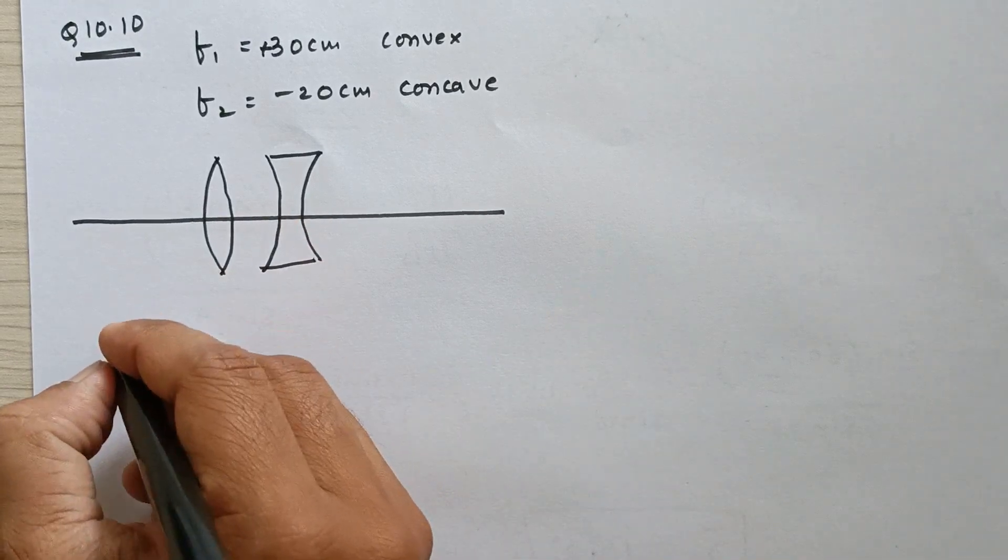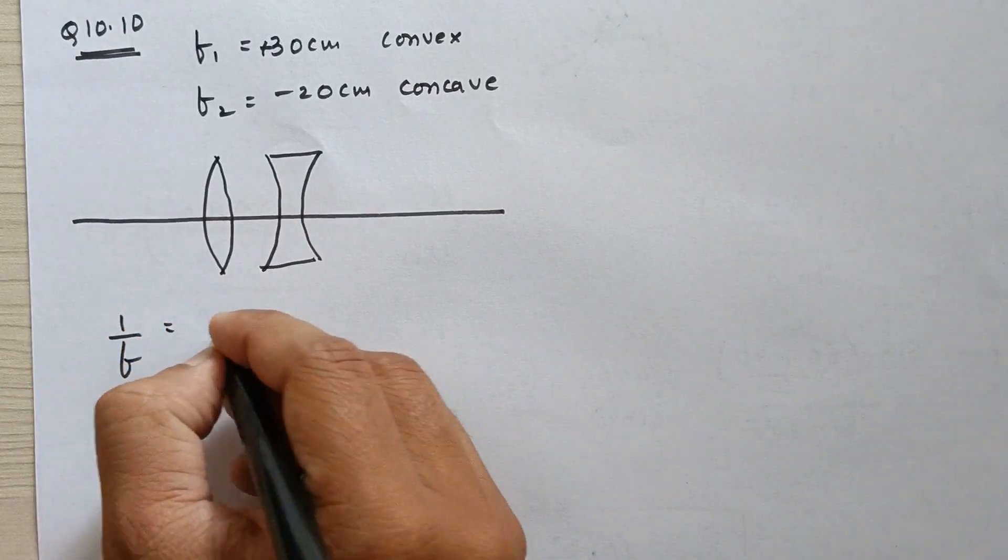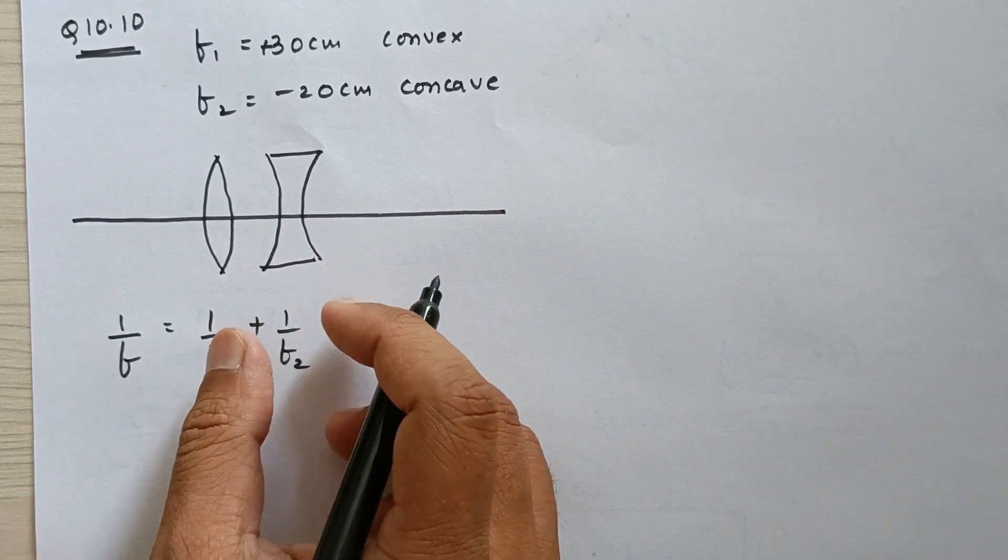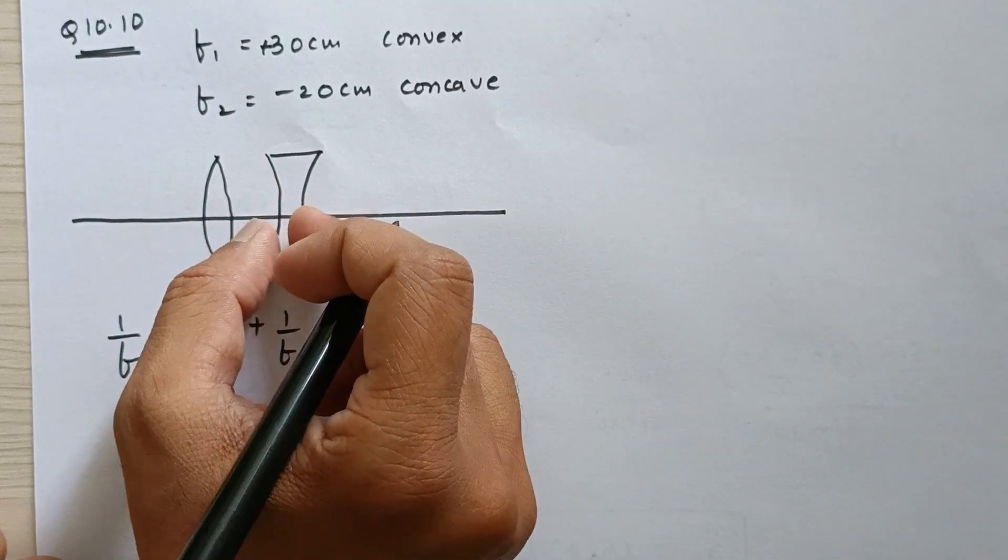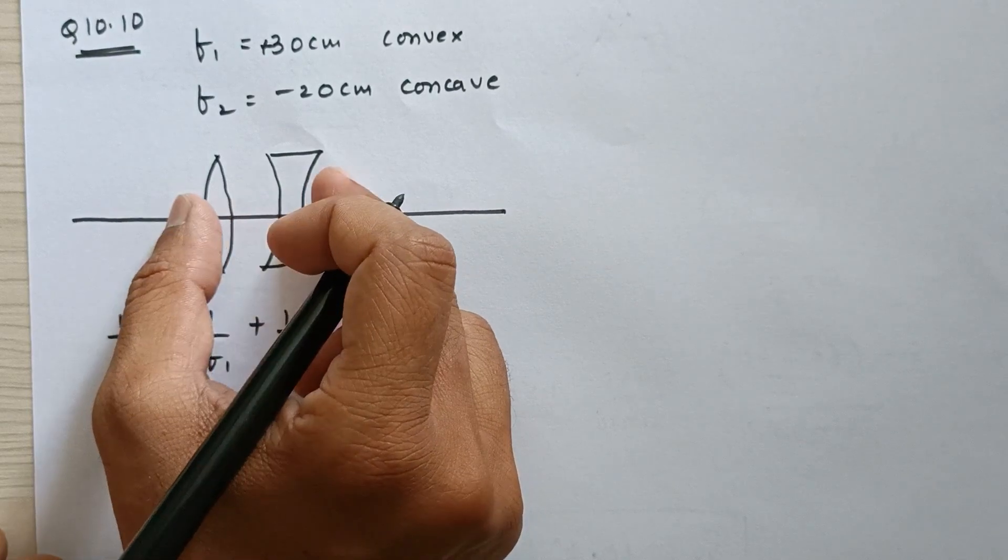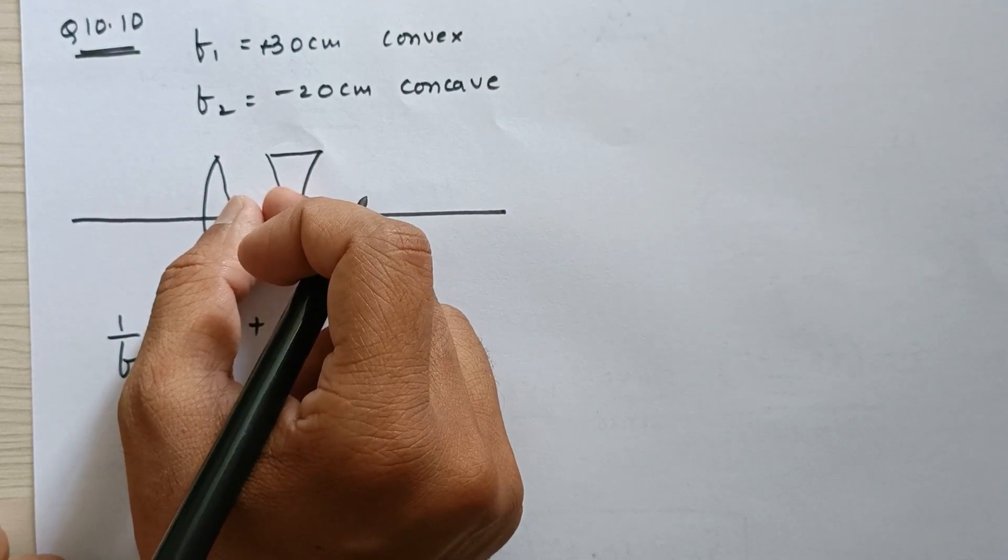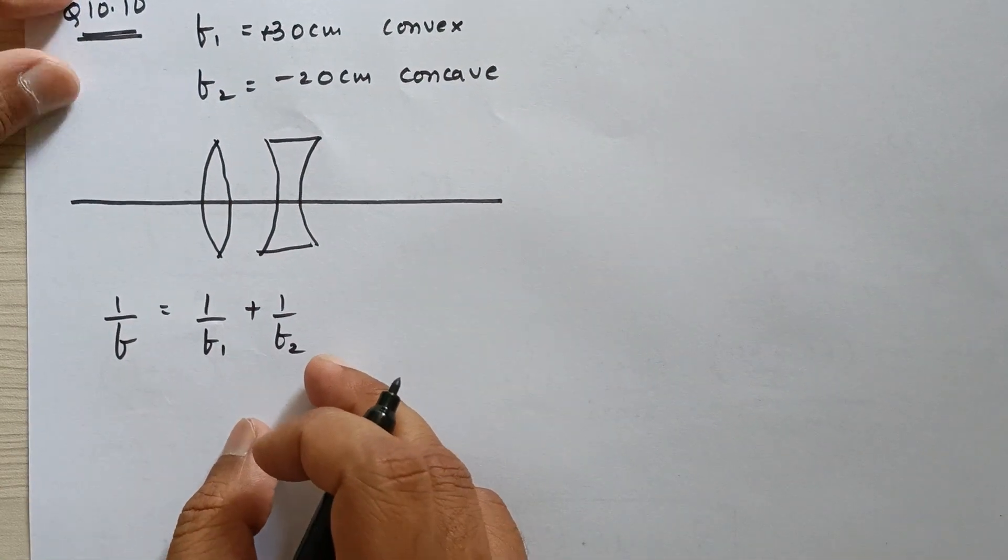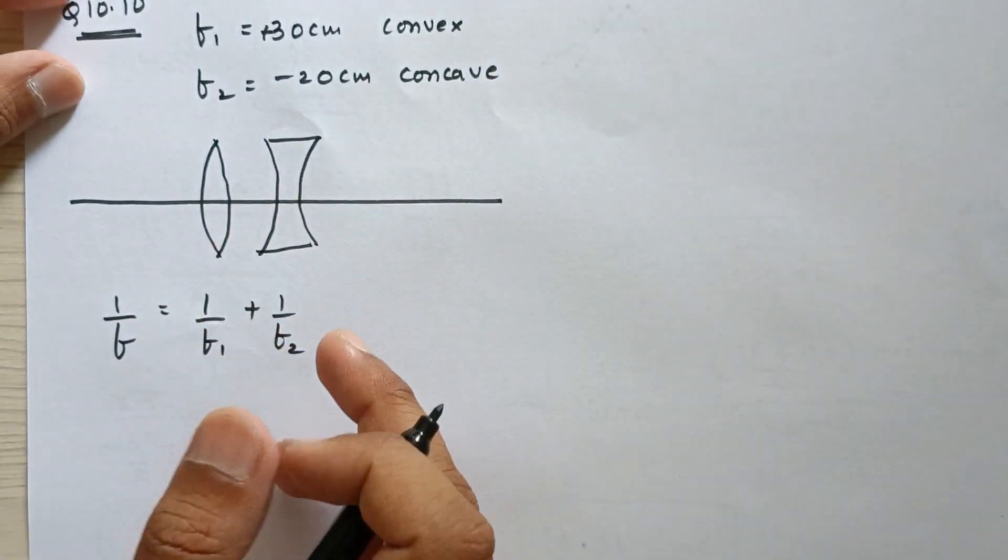We know the formula: 1 upon F equals 1 upon F1 plus 1 upon F2. This formula is for lenses in contact. Please ignore the spacings between these two in the diagram. These are very close to each other and these lenses are thin. Then and only then can you apply this formula. The question itself says that these two are thin lenses and in contact.